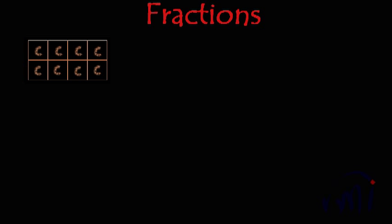Suppose you want a chocolate and you ask for one from your mother. She tells you there is a chocolate in the fridge. You go there and take one cube out of it. What you see in the fridge is a big bar of chocolate which has certain markings that divide it into 8 equal parts. Since your mother asked you to take one part out of these 8 parts, you have removed that cube from the bar and eaten it. The fraction you have taken is mathematically represented as 1 by 8.